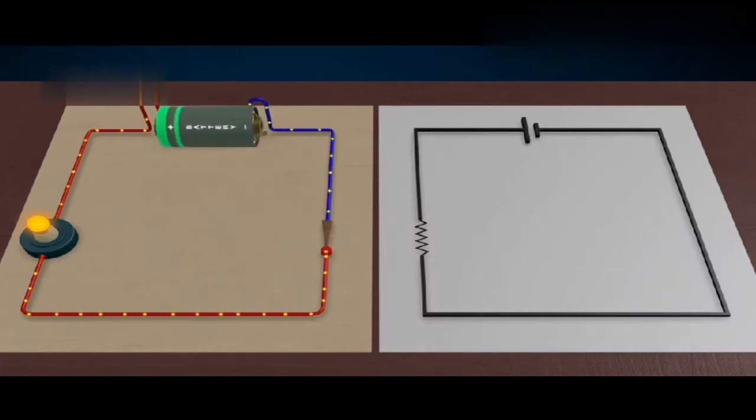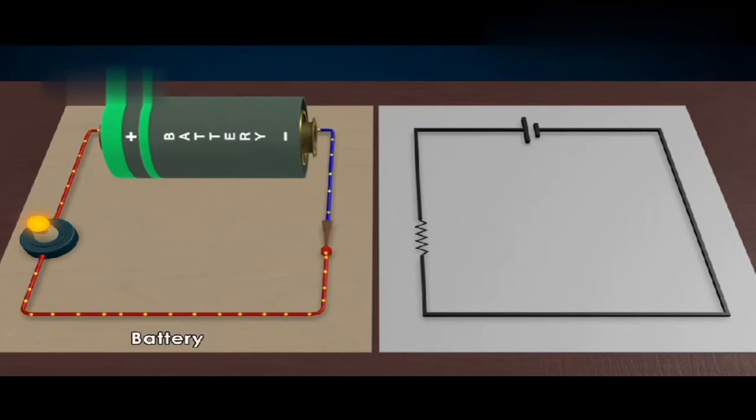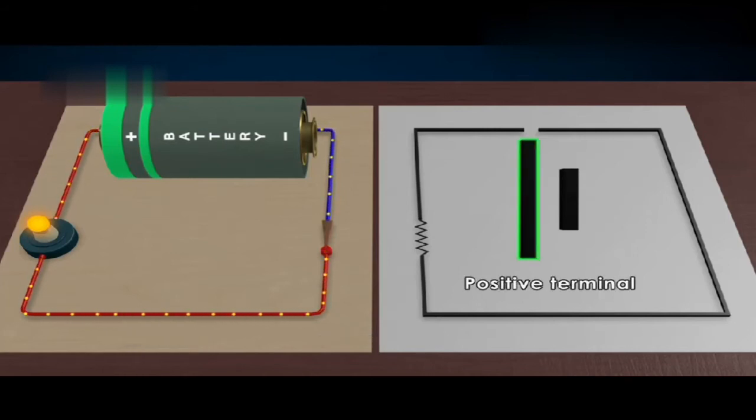The voltage source, in this case a battery, will be represented by alternating long and short parallel lines. The longer line indicates the positive terminal and the shorter the negative. A single cell will be represented by one long and one short line.